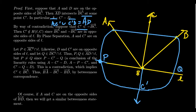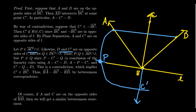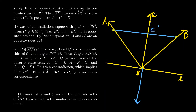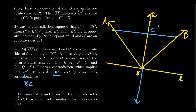The contradiction arose from assuming C' was on the opposite ray, negative BC. So we must assume the opposite: C' belongs to ray BC. Because C' lives on ray BC, the ray BC is the same as ray BC'. And since C' is an interior point of the angle, C is an interior point of the angle, and therefore BC is between rays BA and BD. That was under the assumption that A and D were on opposite sides of line BC.